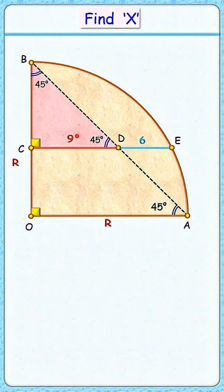As this is an isosceles triangle, BC length will be the same as CD length, or 9 centimeters. And CO length, that will be R minus 9.